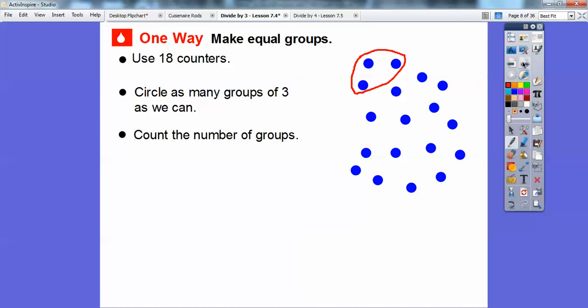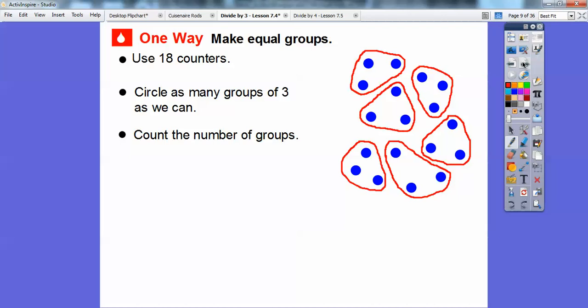So there's one group of three. So you can see I did that on the rest of them. So we circled as many groups of three as we can and we count the number of groups. So here I have 1, 2, 3, 4, 5, 6. So how many groups of three are there? There are six groups of three.